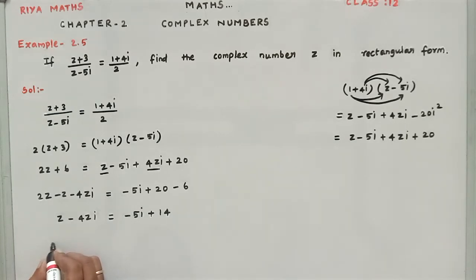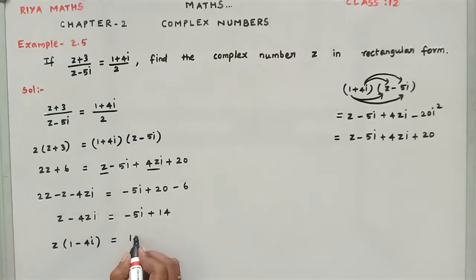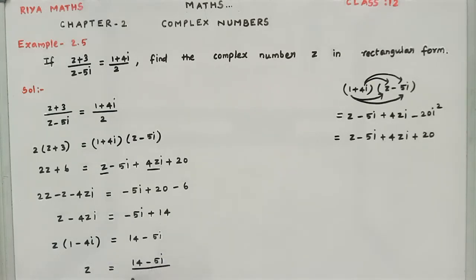We can factor out z: z(1 - 4i) = 14 - 5i. We need only the z term, so z = (14 - 5i) / (1 - 4i). Now we have it in numerator by denominator form and need to bring it to rectangular form.